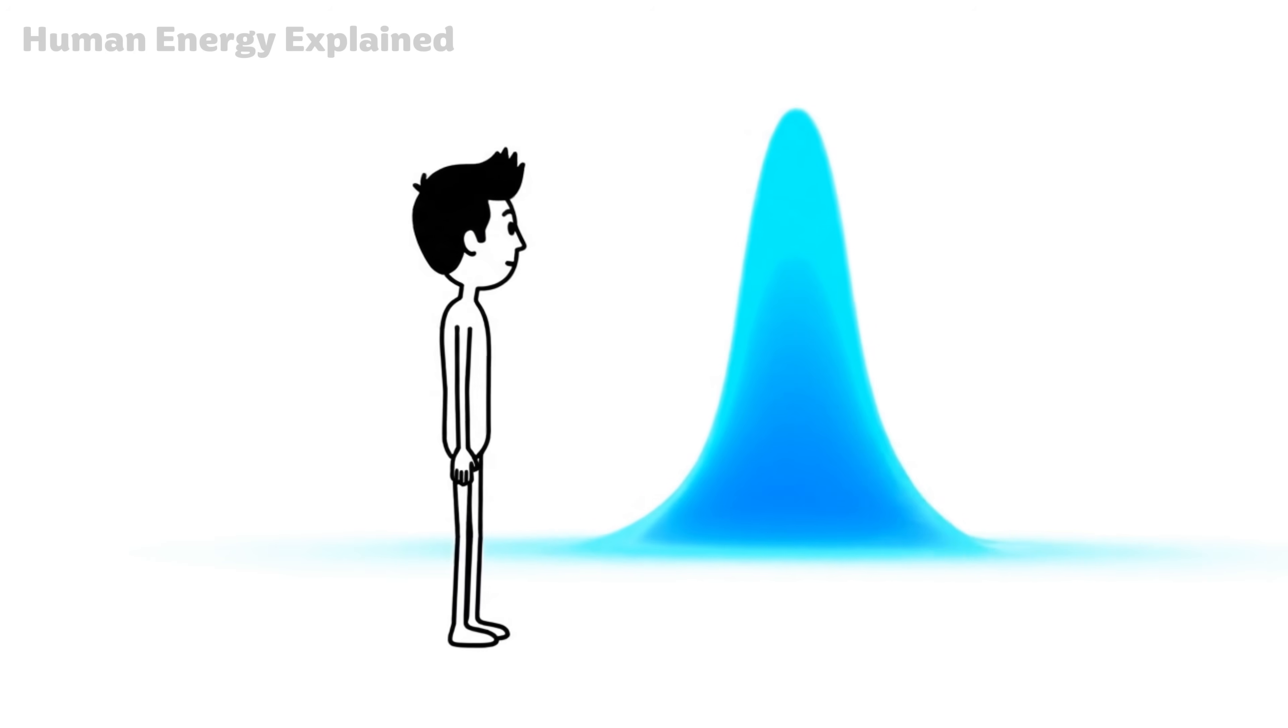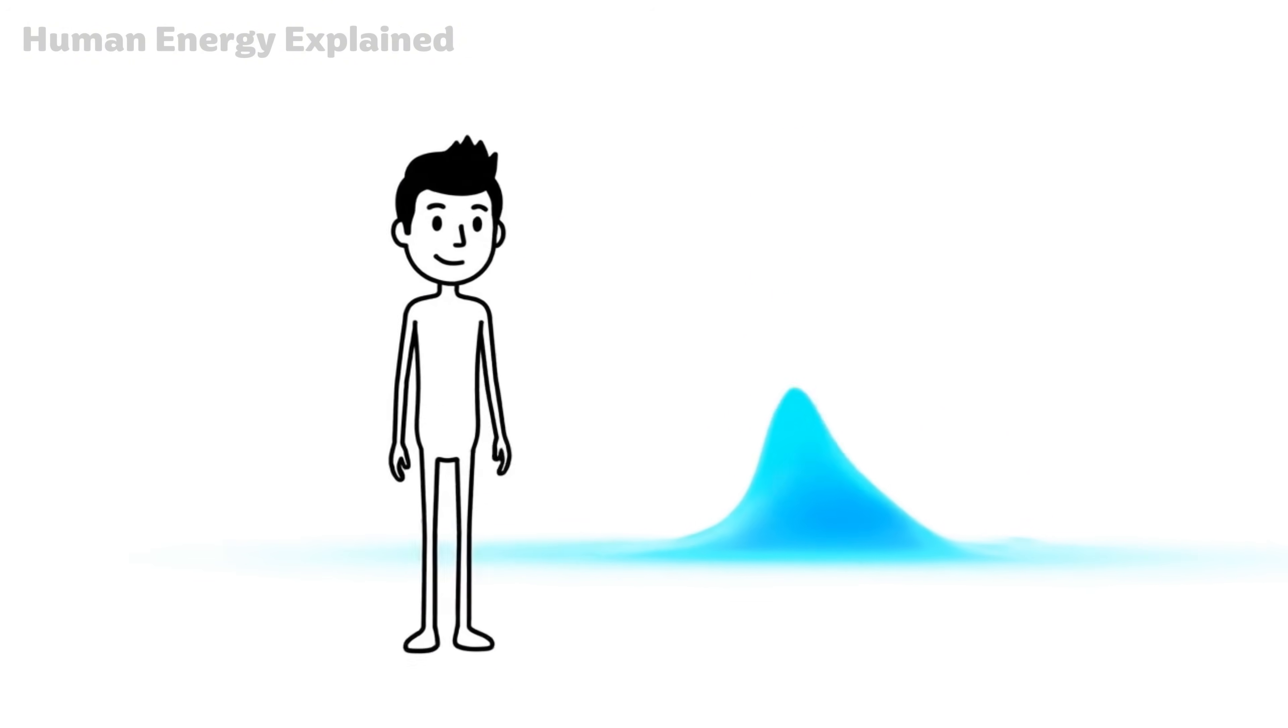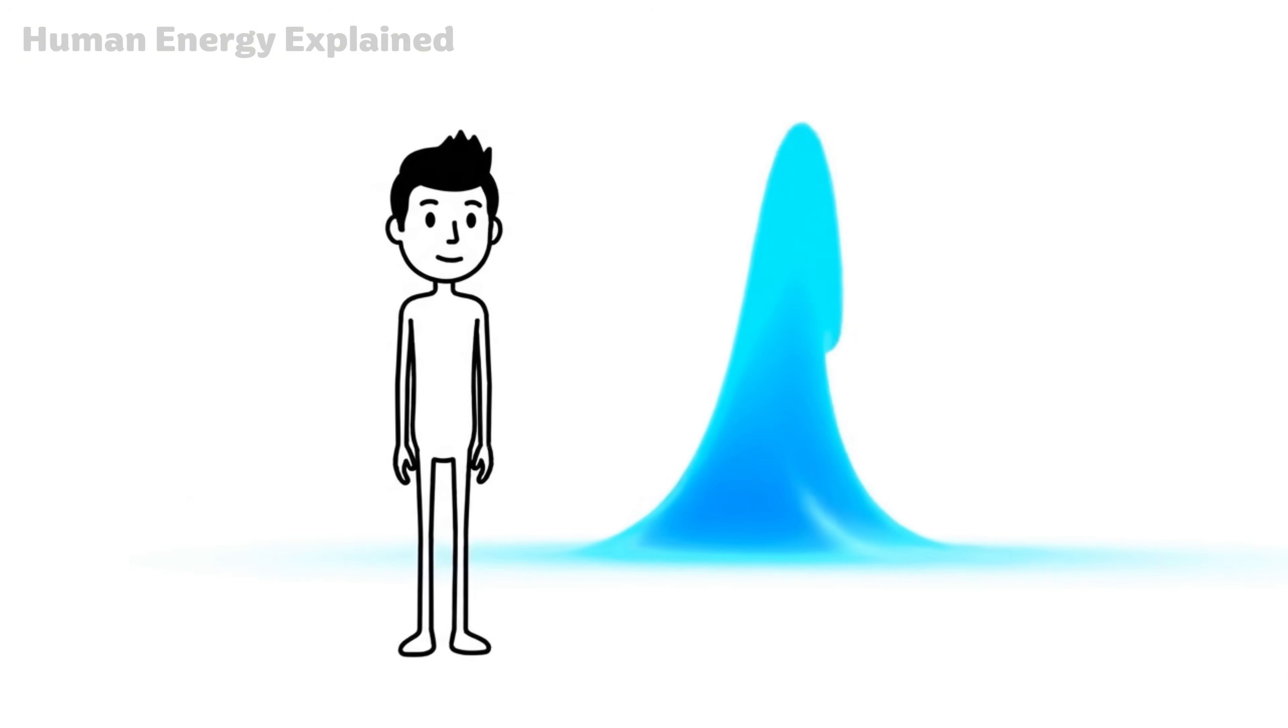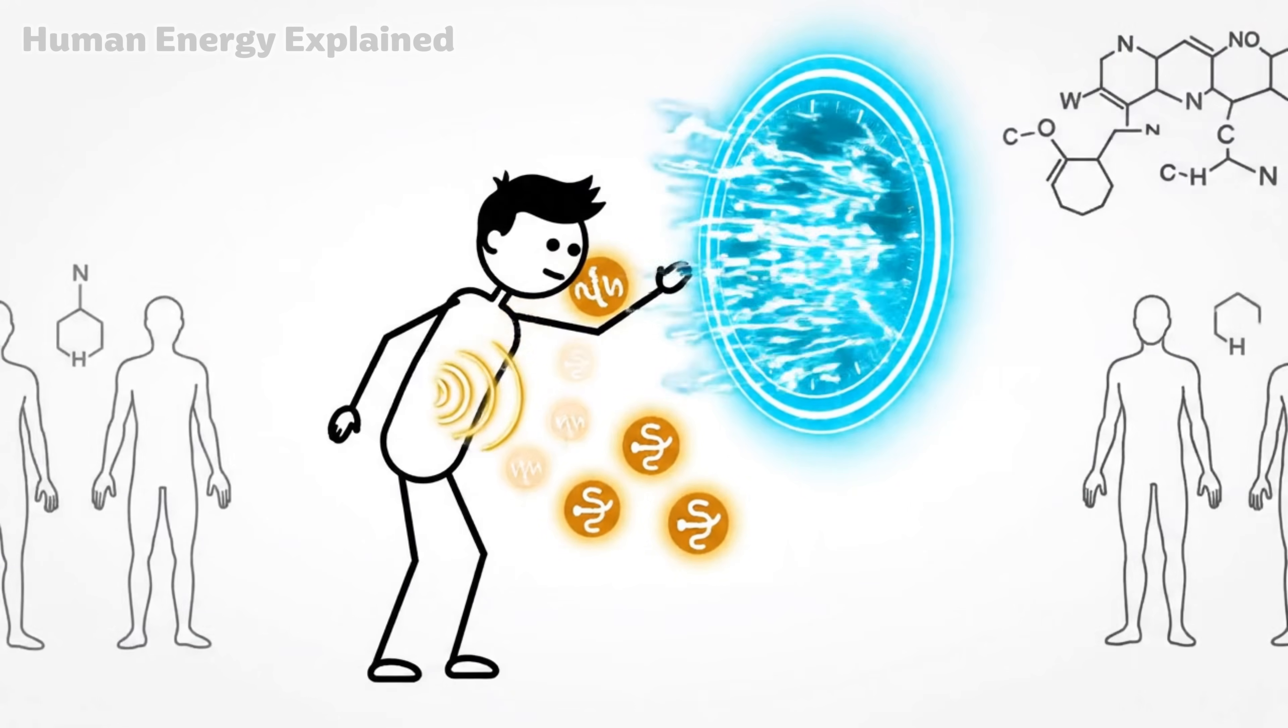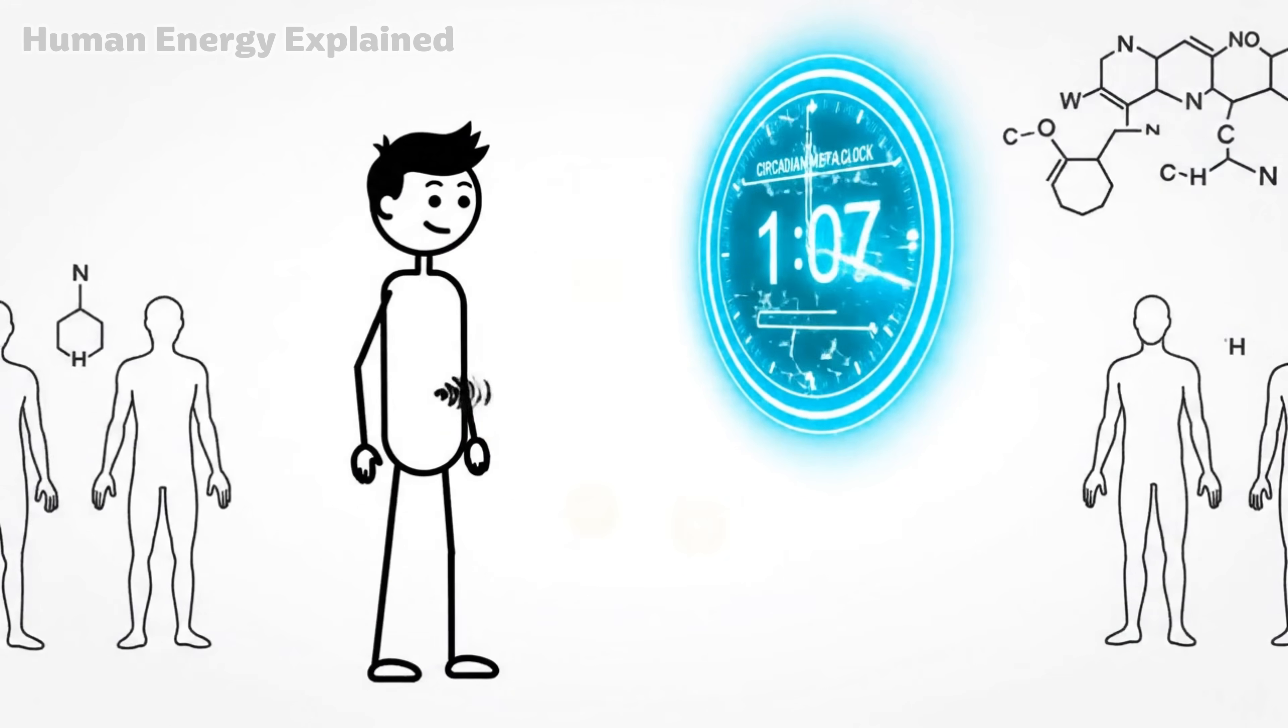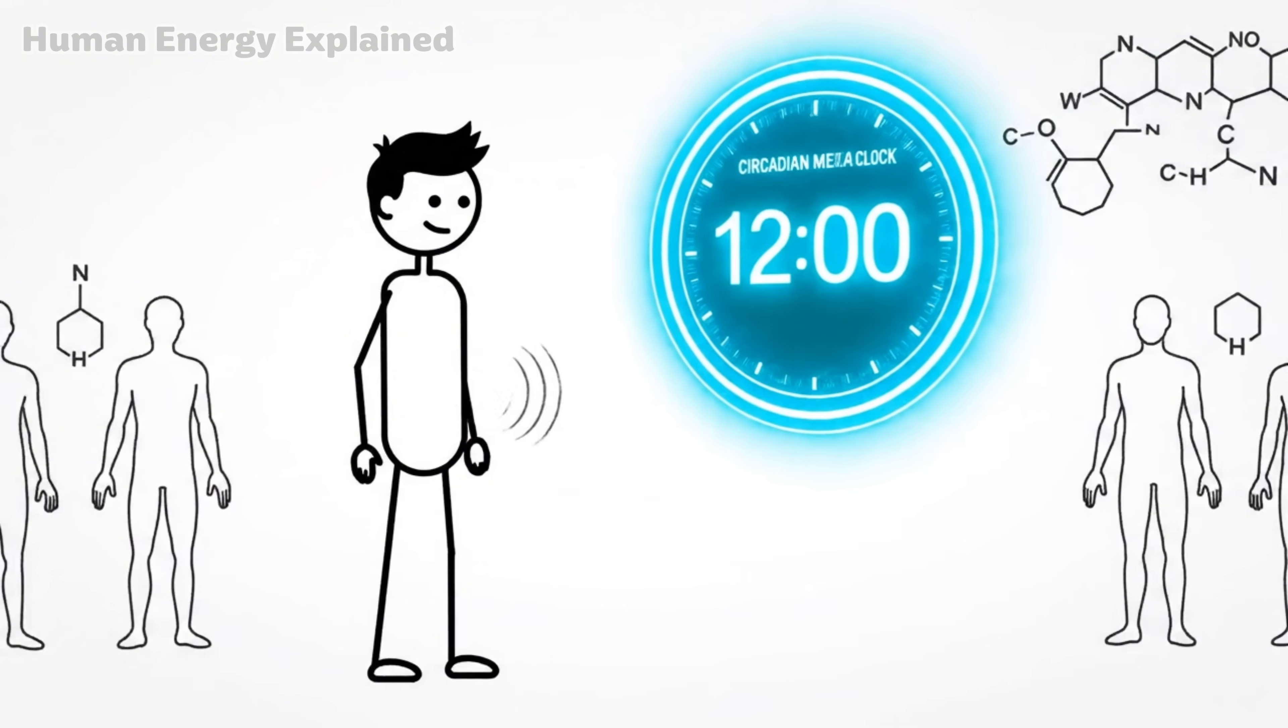This is crucial to understand. Hunger is not a constant flood. It's a series of waves. And if you don't feed each wave, they get smaller. Your body realizes food isn't coming on the usual schedule and starts adjusting its expectations.